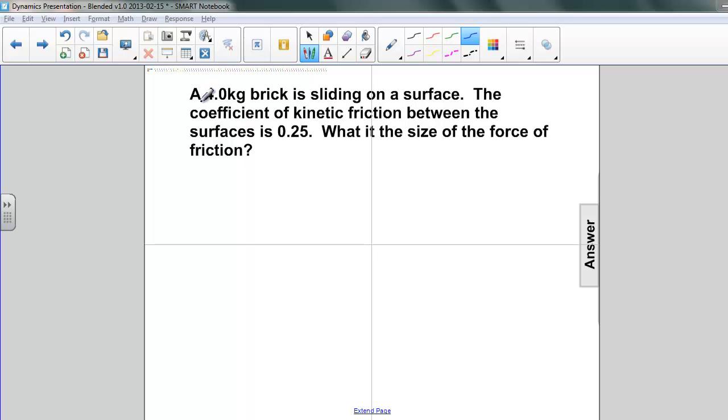Let's look at what information we have. We have the mass of the brick, 4 kilograms, and the coefficient of kinetic friction between the brick and the surface of 0.25. If we write these down: m equals 4 kilograms, and our coefficient of kinetic friction equals 0.25, and we're looking for the force of friction.